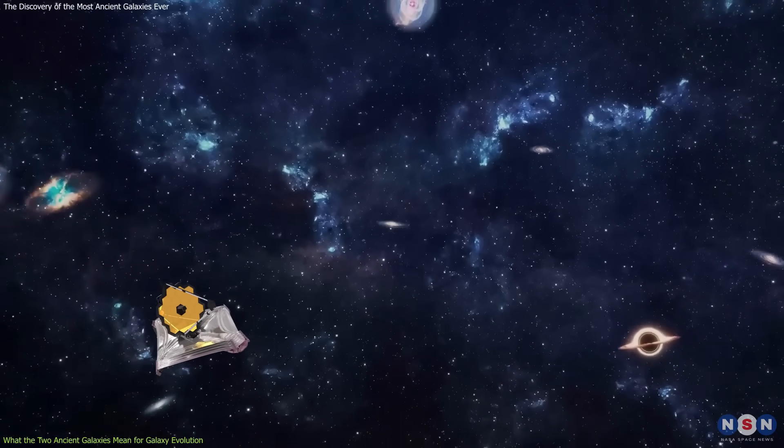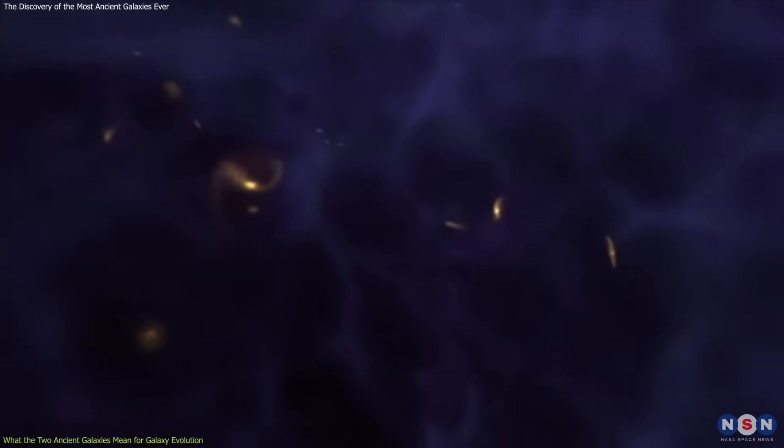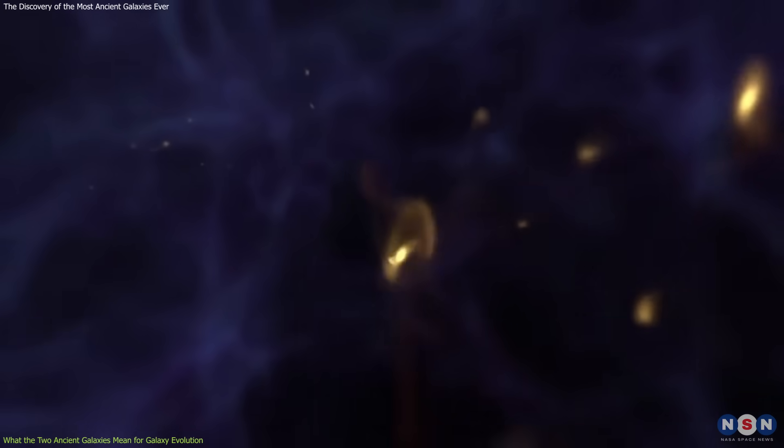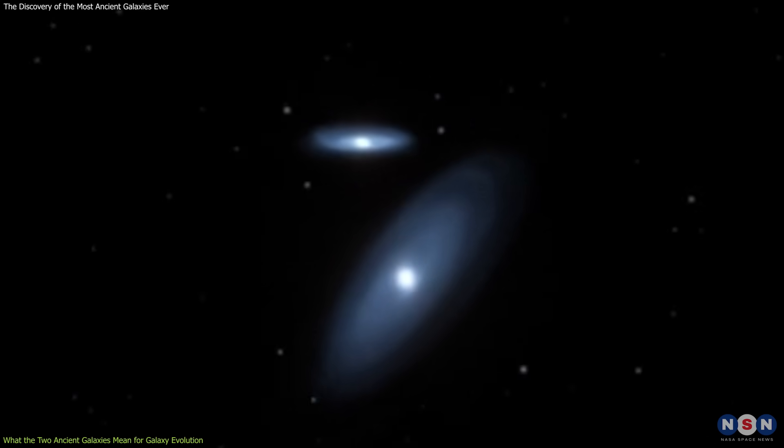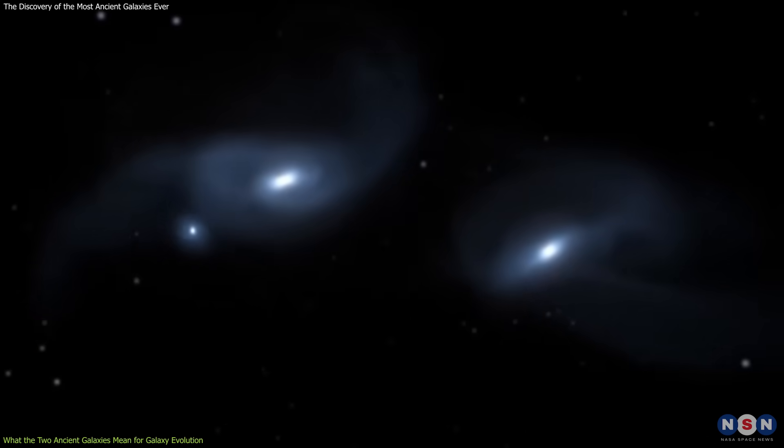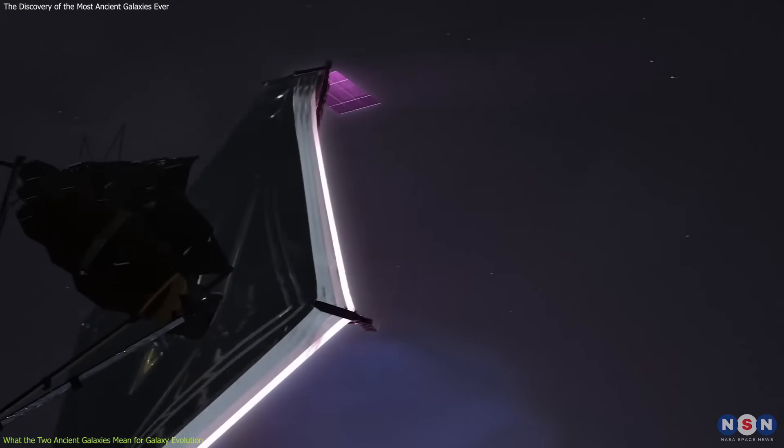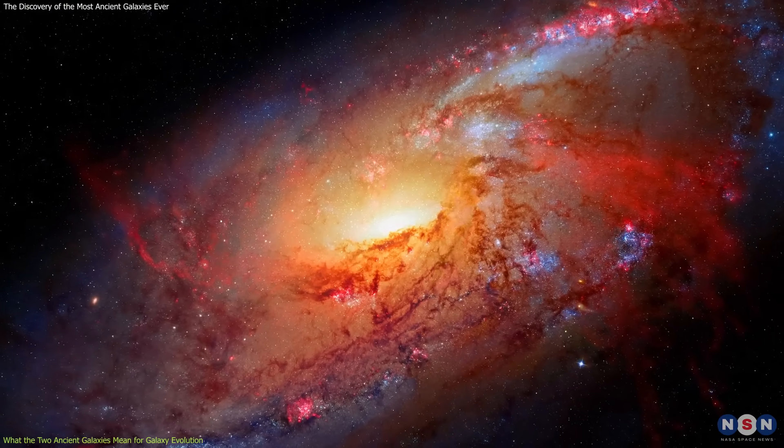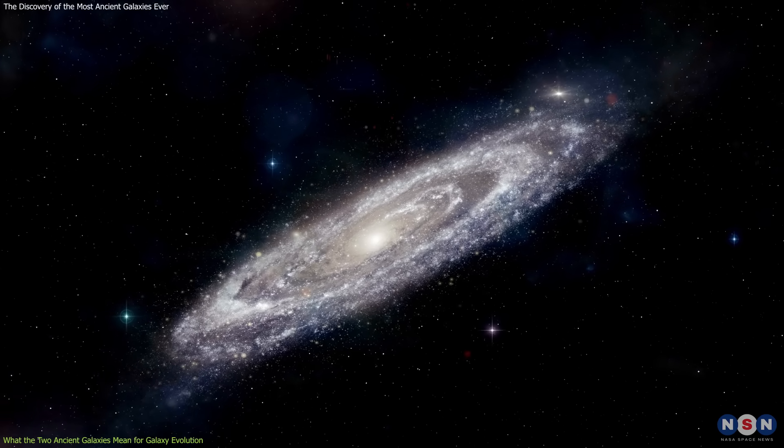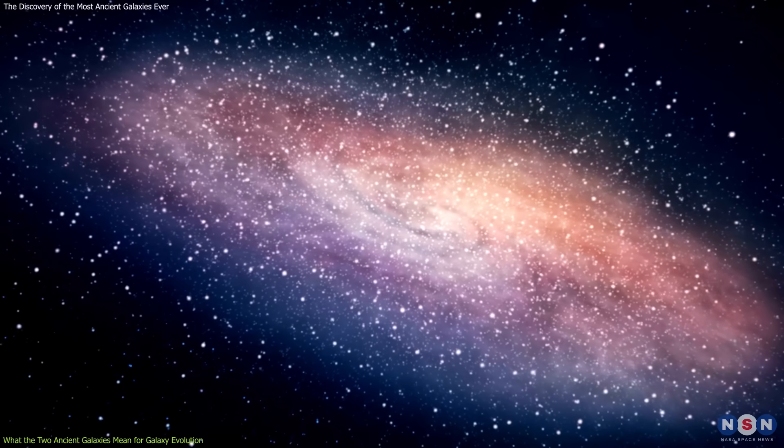These two galaxies also raise new questions and open new possibilities for further research on these and other distant galaxies with the James Webb. Some of the questions are: How did these galaxies form and evolve? How common or rare are they in the early universe? How did they interact with each other and with their environment? How did they influence the subsequent generations of galaxies? Some of the possibilities are to observe more distant galaxies with higher redshifts, closer to the first stars and galaxies, and to observe more diverse galaxies with different properties, revealing the variety and complexity of the early universe.